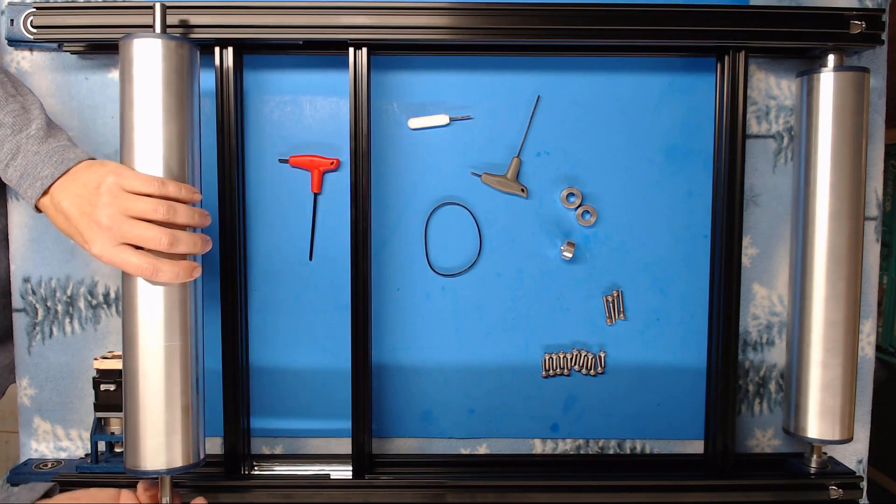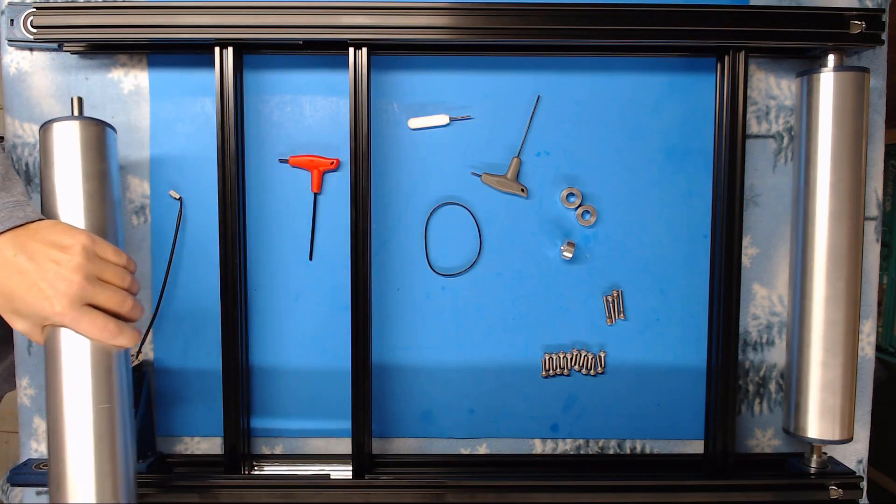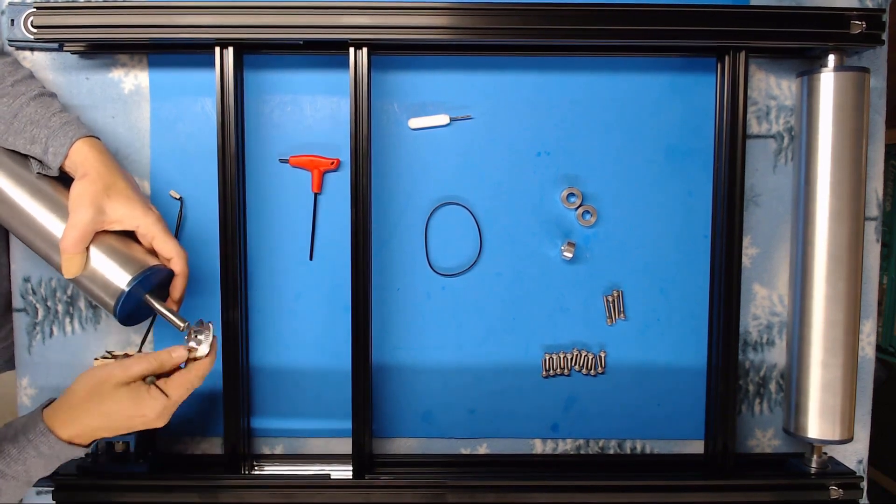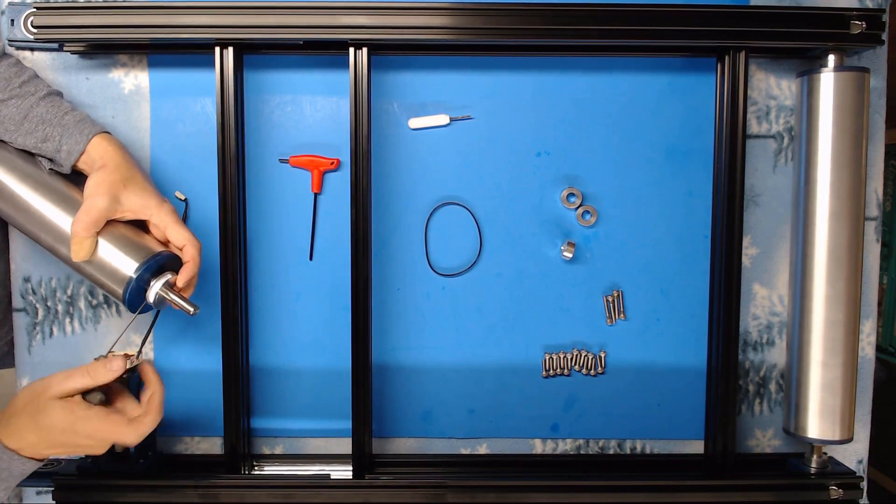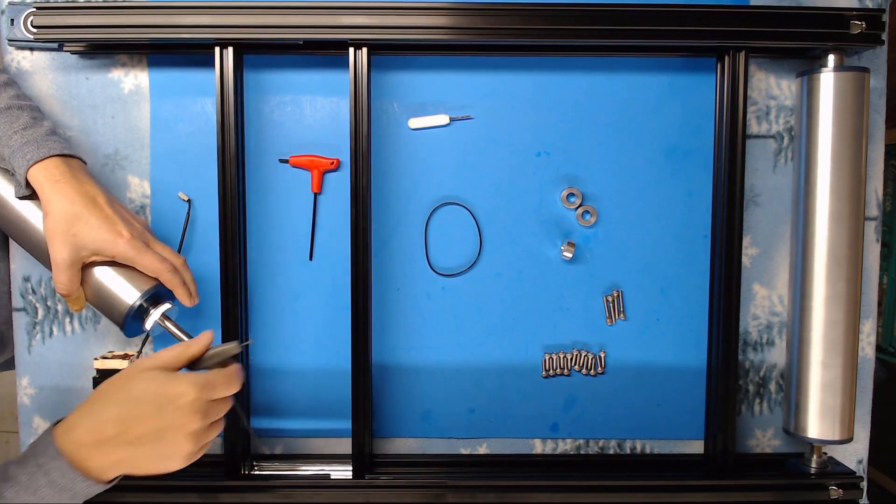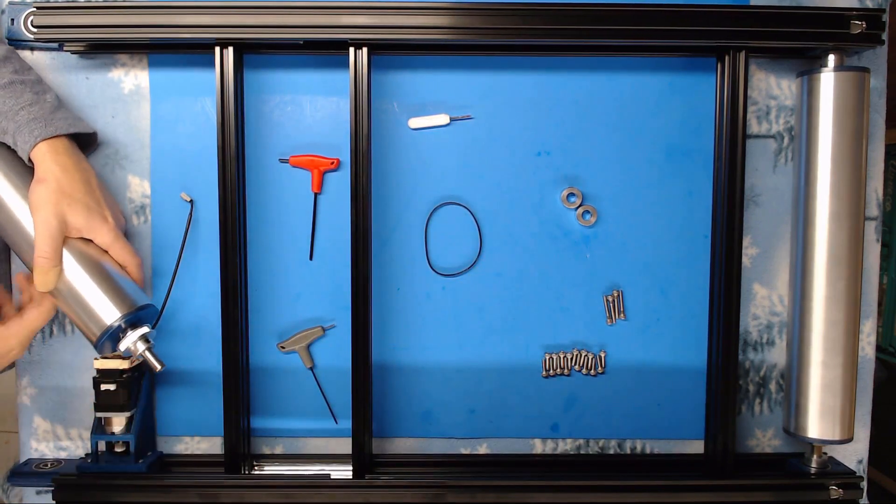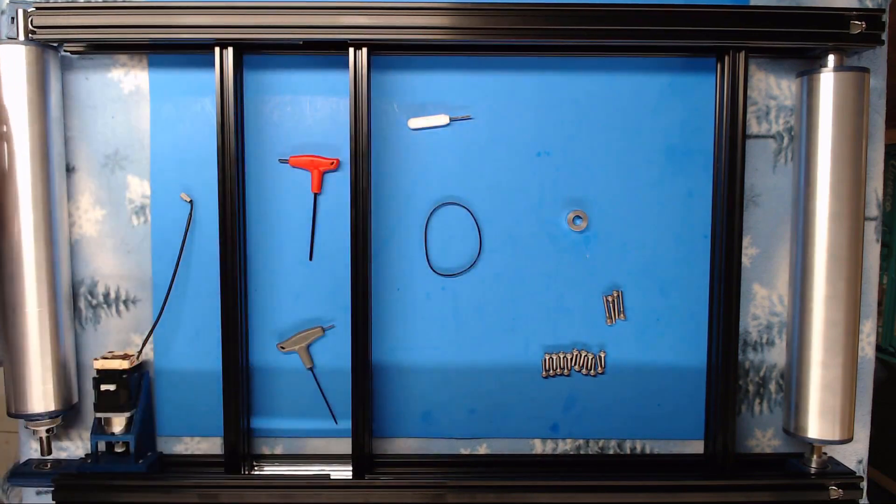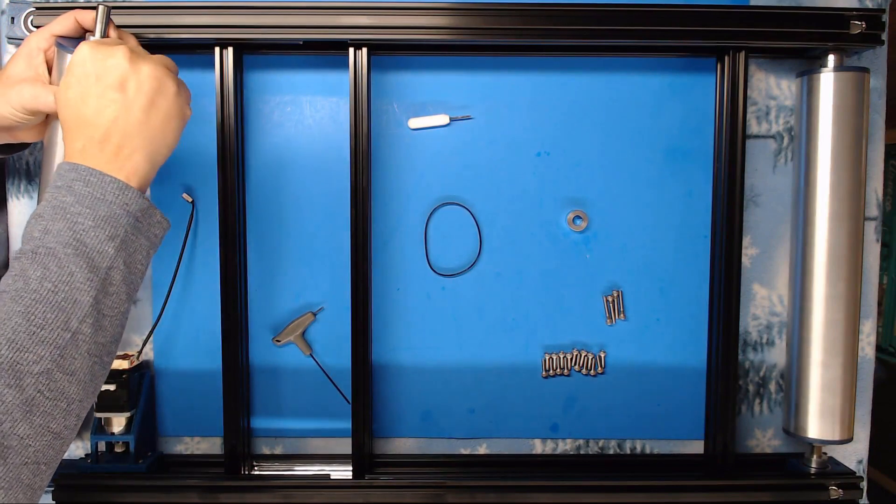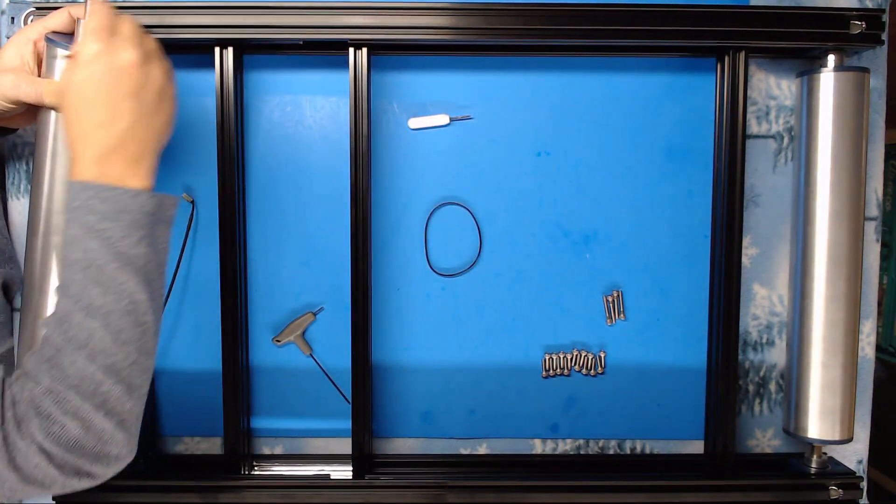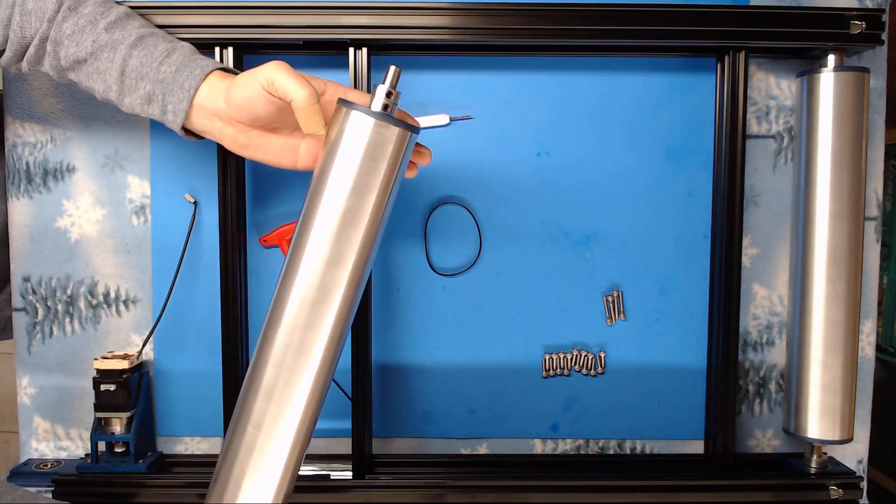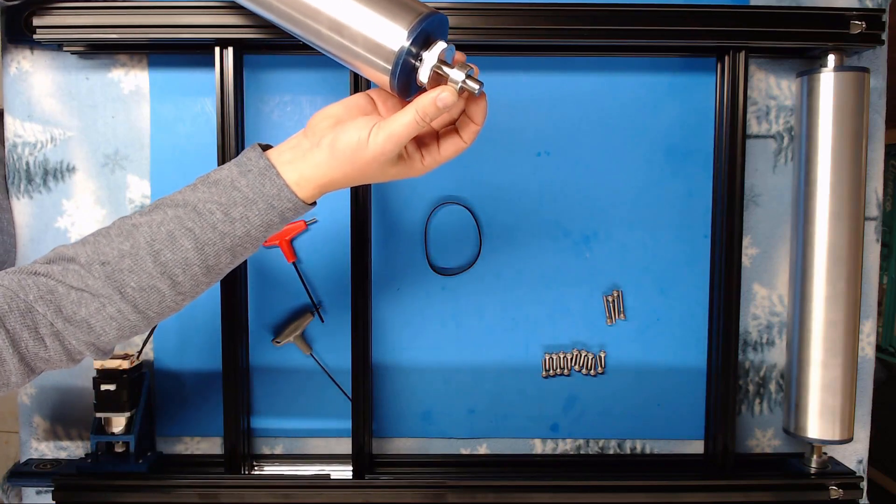Now on this one here on this side and the long side you're going to take and put your 60 tooth pulley on and flush it up against, whoops the other direction though. Put it flush against the roller. And then one shaft collar. And then on the other end you're going to put your two shaft collars on. So this roller has two shaft collars on one end and your 60 tooth and a shaft collar on the other end.